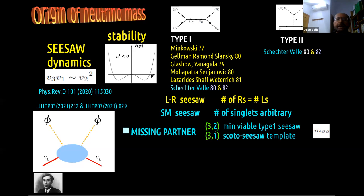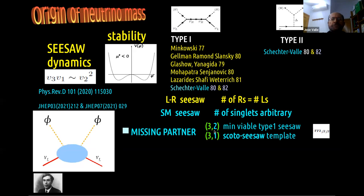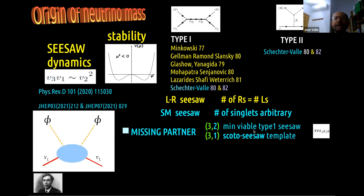So we can still envisage missing partner seesaw schemes having fewer singlets than doublet neutrinos. For example, the 3,2 scheme is in fact the minimal viable type-one seesaw. And the 3,1 scheme is not fully viable by itself because there is a projectivity of this matrix that implies there are no masses for the solar neutrino states. But you can lift that degeneracy in a calculable manner by reconciling the seesaw paradigm with the Scotogenic paradigm within this 3,1 picture, and obtain a complete theory of neutrino oscillation in which you also explain why the solar and atmospheric oscillation lengths are so disparate.